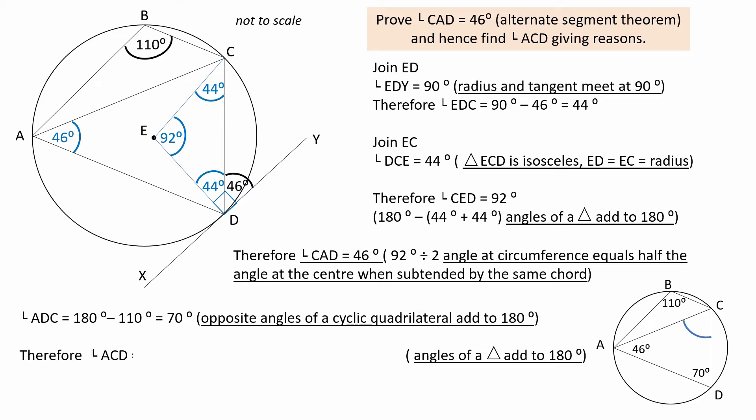Using the reason that angles of a triangle add to 180 degrees, angle ACD can be calculated. Angle ACD equals 180 minus the sum of the other two angles, which is 180 degrees minus 116 degrees, giving 64 degrees. Therefore, angle ACD equals 64 degrees.